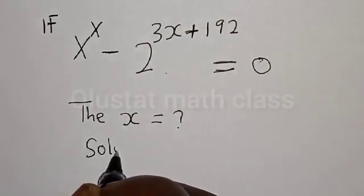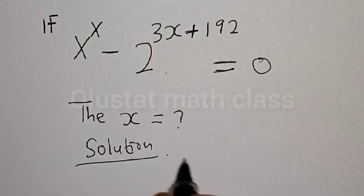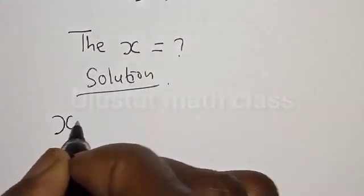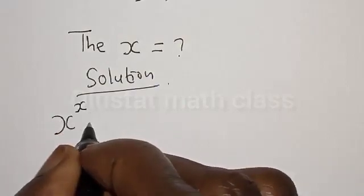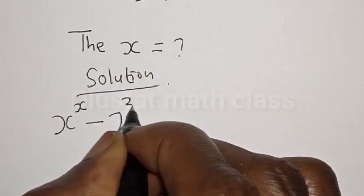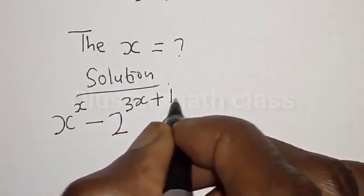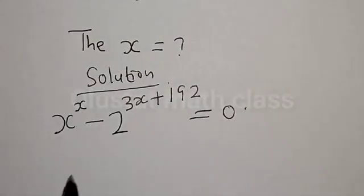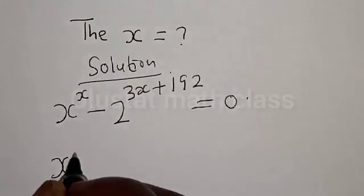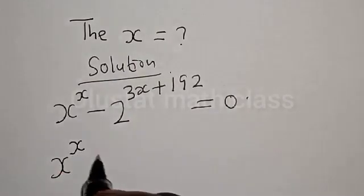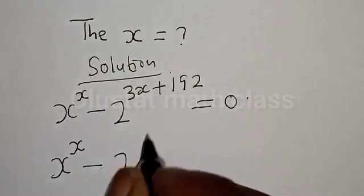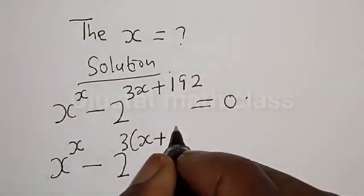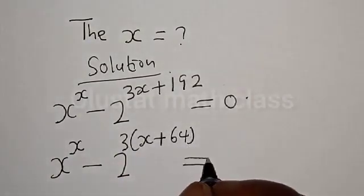Solution. We have the given equation: s raised to power x minus 2 raised to power 3s plus 192 is equal to 0. Now what do we do? We have s raised to power x minus 2. Let's factor this.